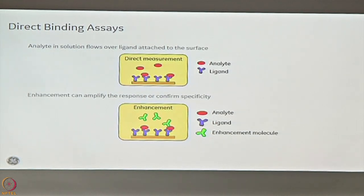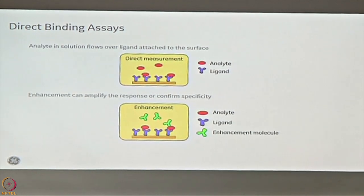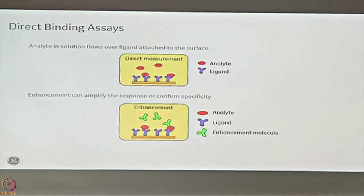The first assay format is the direct binding assay format, which is very simple. Your interactant is immobilized on the surface. In Biacore, whatever goes on the surface is called the ligand, and whatever is flown on the flow cell is called the analyte. In the direct binding format, your ligand is covalently linked to the surface and your analyte is moving on top.